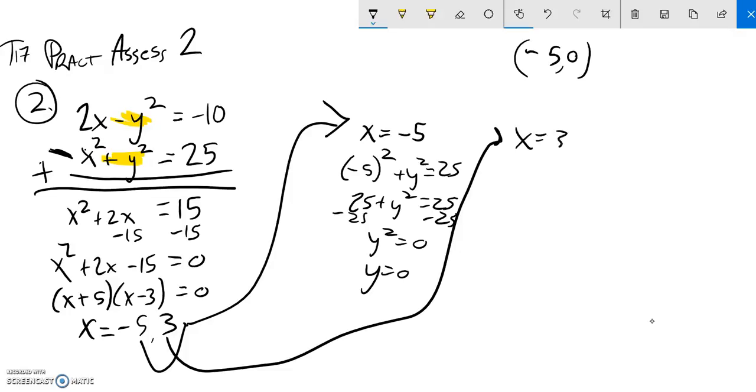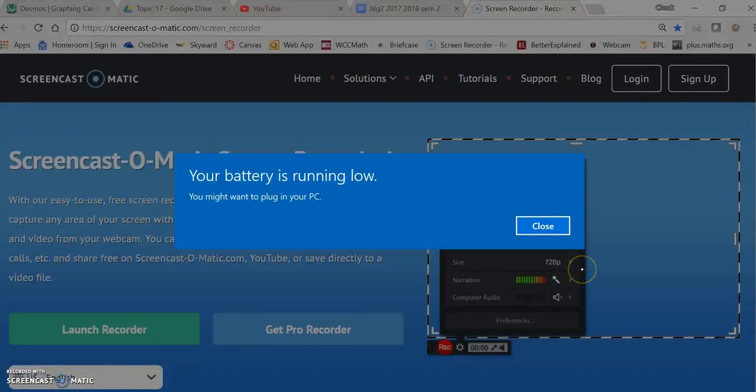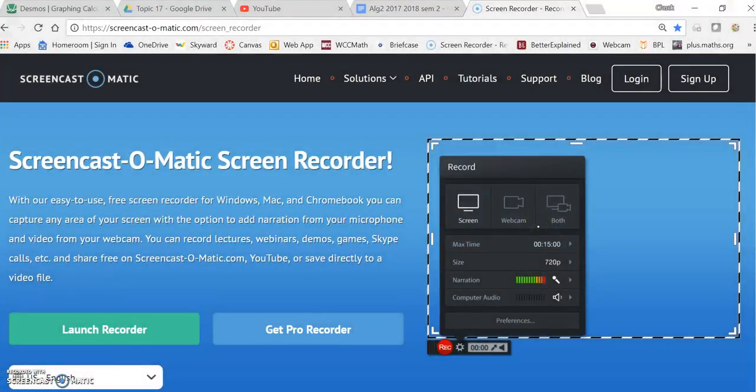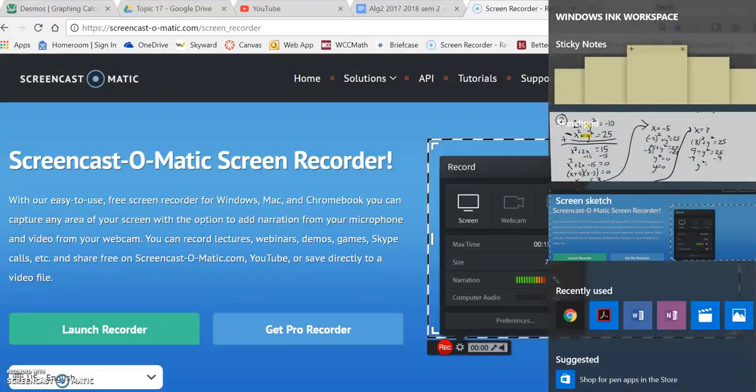Now I'll do it with 3. When x equals 3, plug it in. I'll use the same equation. X squared plus y squared equals 25. So 9 plus y squared is 25. Subtract 9 from both sides. Y squared is 16.